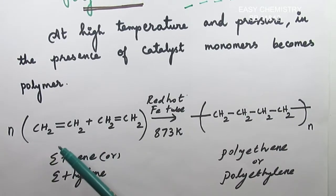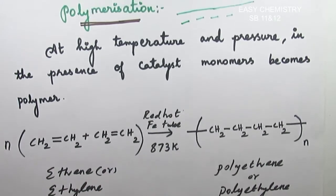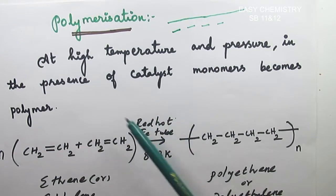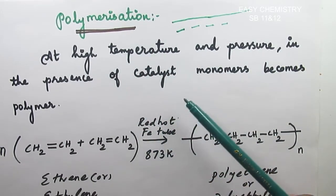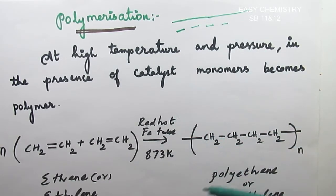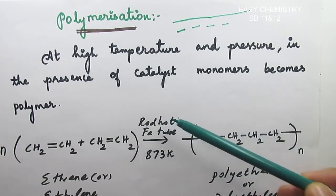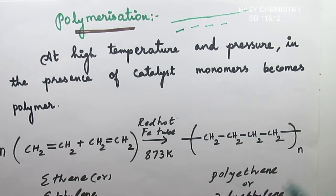Let's take an example - ethene. At high temperature and pressure, in the presence of catalyst, monomers become polymer. This is a monomer.